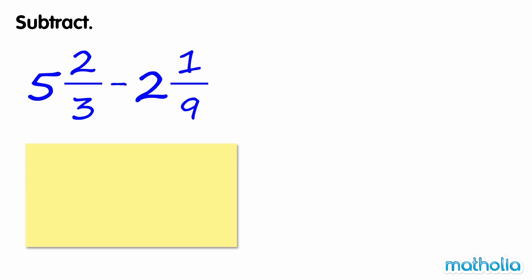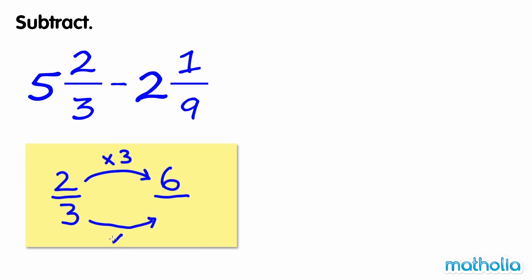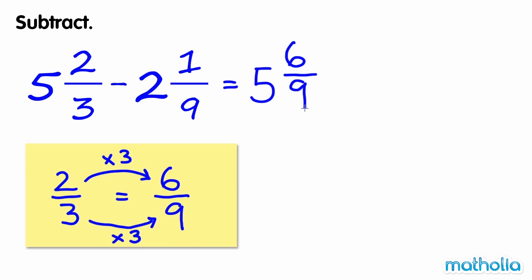Let's multiply the numerator and the denominator of 2 thirds by 3. 2 thirds is equal to 6 ninths. We can rewrite the equation as 5 and 6 ninths minus 2 and 1 ninth.